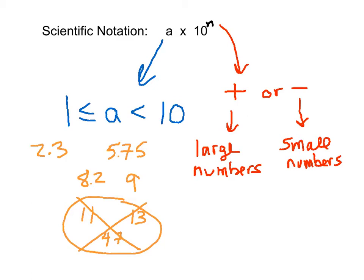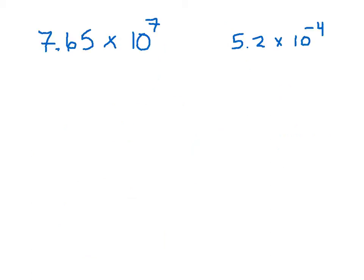Let's look at some examples of numbers in scientific notation. Here are two examples of numbers correctly written in scientific notation. The side with 10 raised to an exponent is straightforward. For the other part, this number needs to be between 1 and 10 — it cannot be 10. It has to have just one numeral in the ones place, then a decimal point, then whatever's left over. Both numbers shown here are between 1 and 10, so we're good.